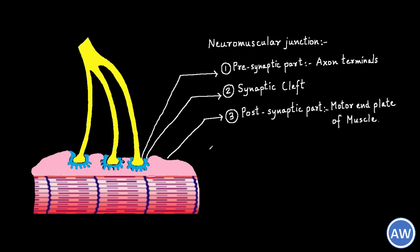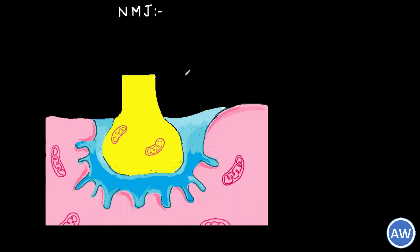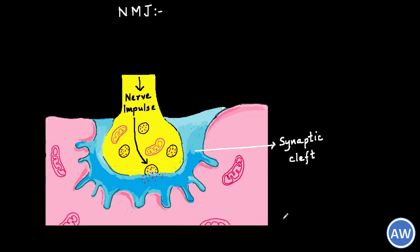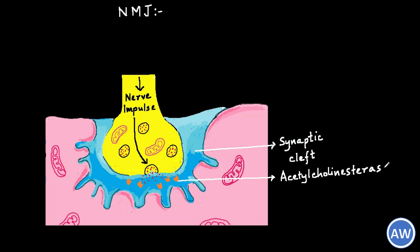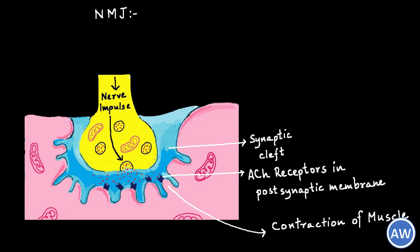This postsynaptic part is anatomically different from a synapse between nerves — in a neural synapse, the postsynaptic part is formed by another neuron. In neuromuscular junctions, vesicles carrying acetylcholine as neurotransmitter are present in the axon terminals of the presynaptic membrane. When a nerve impulse reaches the axon terminals, the neurotransmitters are released into the synaptic cleft. The synaptic cleft in the neuromuscular junction is about 20 to 50 nanometers in size and contains an enzyme called acetylcholinesterase. This enzyme acts on the acetylcholine released into the synaptic cleft, and almost half of the acetylcholine is lost before it can reach the postsynaptic membrane. The remaining acetylcholine acts on the acetylcholine receptors present in the postsynaptic membrane and initiates reactions that lead to contraction of the muscles.